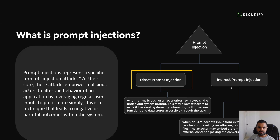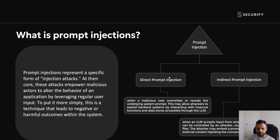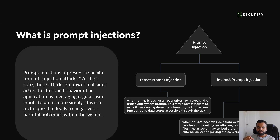There are mainly two techniques: direct and indirect. As the name suggests, direct is when I as a user am asking the model something as a prompt, and the model gives me information which I should not have by default or given my privilege level.